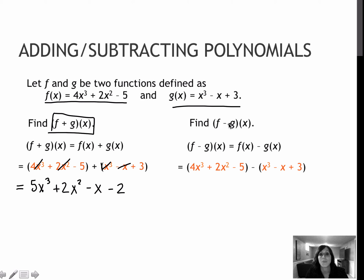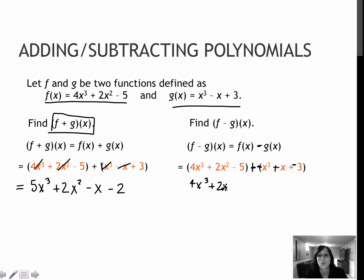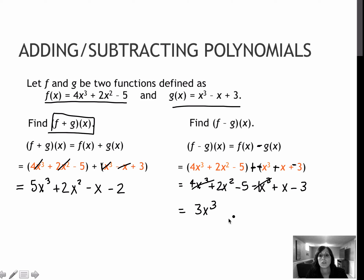For my second one, notice this is f minus g of x, so I'm going to subtract g. When I subtract, I've got a minus on the outside of parentheses, so again I'm going to use ching ching to make it plus and then change every sign after that. I've got a negative x to the third, a positive x, and a negative 3. Now combining like terms: 4x to the third and negative 1x to the third is 3x to the third. Plus 2x squared does not combine with anything. Plus x does not combine with anything. And minus 5 combines with minus 3 to give me minus 8.